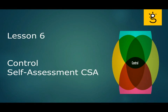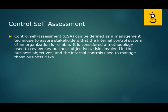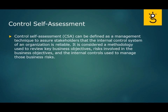We're going to take a look at control self-assessment in this lesson. The definition is really a management technique to assure stakeholders that the internal control systems of an organization are reliable. They do it by having a methodology that allows them to review the key business objectives, the risks involved with those objectives, and the internal controls used to manage those risks. It's an ongoing evaluation, as though the internal employees were doing their own constant audit of the internal controls to make sure they are safe, secure, and meeting the objectives. That ongoing monitoring is what brings extra confidence to stakeholders that the organization is doing everything it can to be reliable.